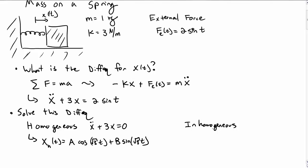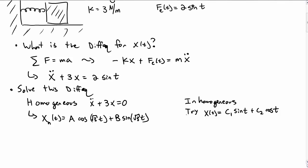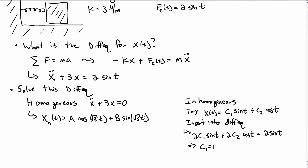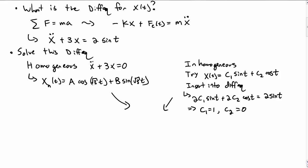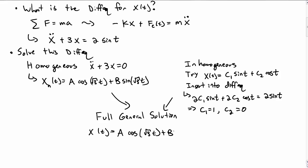For the particular solution — the solution to the inhomogeneous differential equation — we try a test solution of c1 sine of t plus c2 cosine of t. Inserting this into the differential equation, we get the condition that 2c1 sine of t plus 2c2 cosine of t must equal 2 sine of t. Clearly c1 is 1 and c2 is 0, so the particular solution is sine of t. Adding these together gives the most general solution: the homogeneous terms cosine of √3t and sine of √3t, plus the particular solution sine of t.